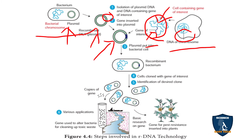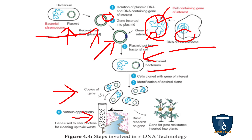This recombinant DNA is inserted into a bacteria that does not possess a plasmid — this bacteria is now called recombinant bacteria. The recombinant bacteria is cloned using fission techniques such as binary fission, transduction, and transformation. Through cloning, more copies of the gene are produced. These copies may be used to clean sewage waste and pollution, or to produce pest-resistant and disease-resistant varieties of plants. This is the R-DNA technology.